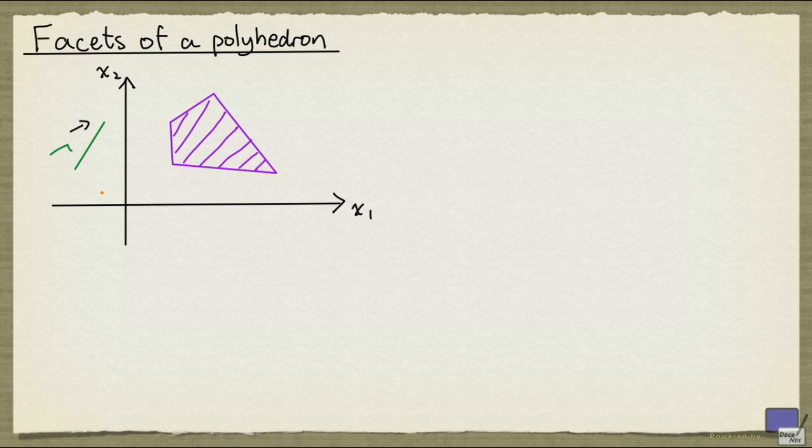So what's the difference between these two polytopes? The one on the right has dimension 2, whereas the one on the left has dimension 1.